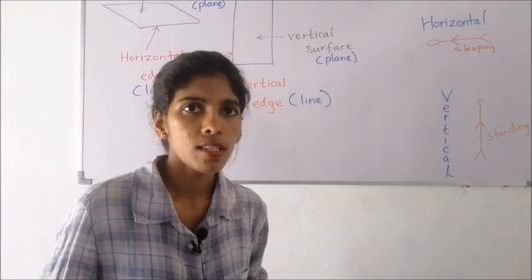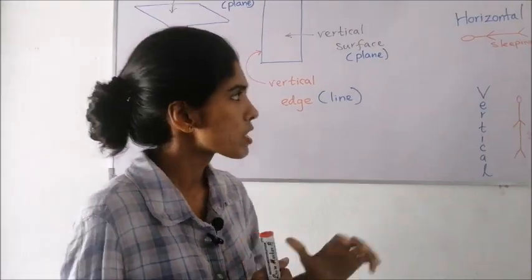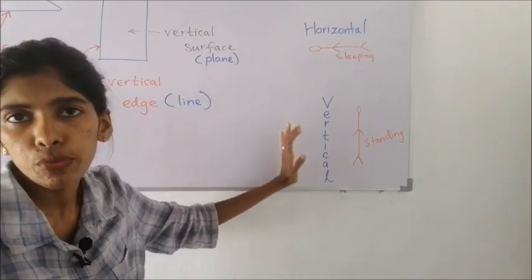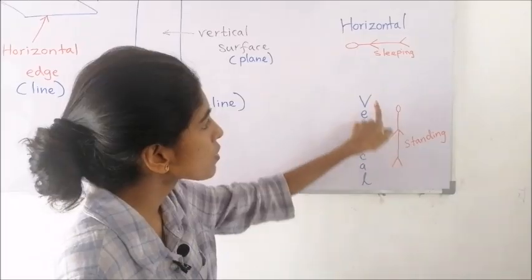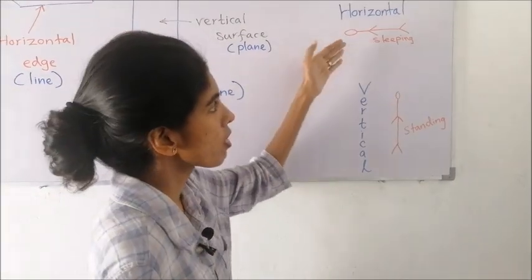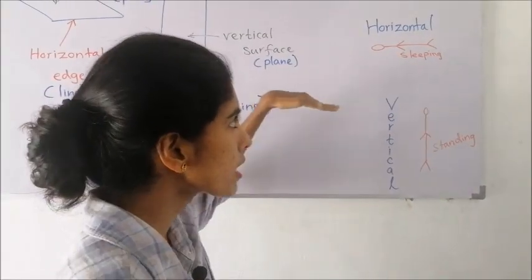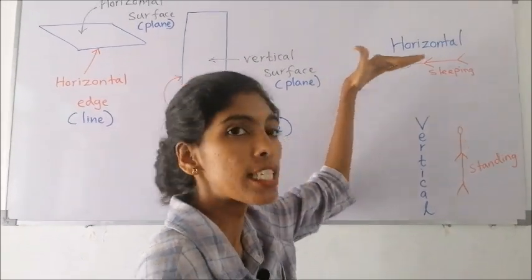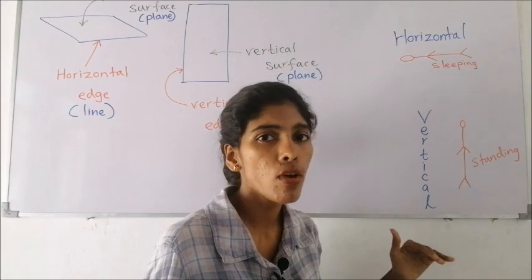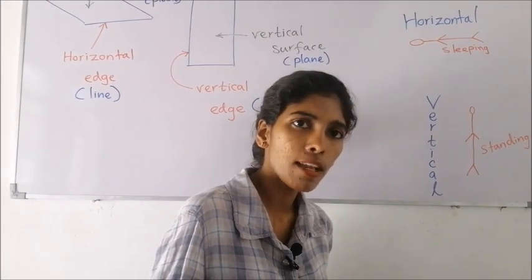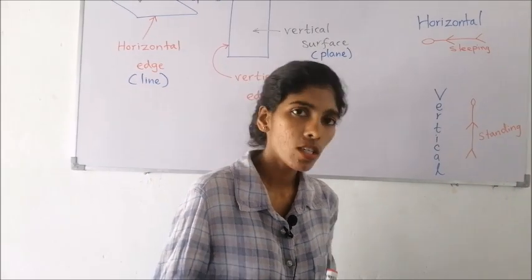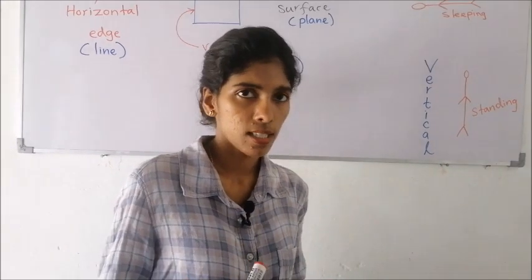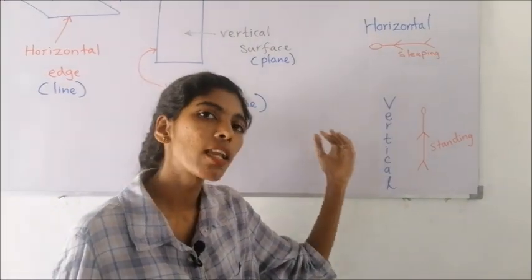In addition to the directions, there are two other concepts to describe the location of an object. They are horizontal and vertical. I have drawn two figures to describe that. Horizontal means like sleeping — surfaces or edges that are lying flat. There can be horizontal surfaces and also horizontal edges. Surfaces can be named as planes, and edges can be named as lines.